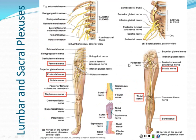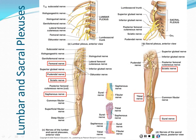Moving down into the leg — the lumbar and sacral plexuses are even more complex than the brachial plexus. Spinal nerves T12 through L5 form the lumbar plexus pattern, and then the sacral nerves emerge from the sacrum and mostly join together to form what is the largest nerve in the body — the sciatic nerve, which runs down the back of the leg.